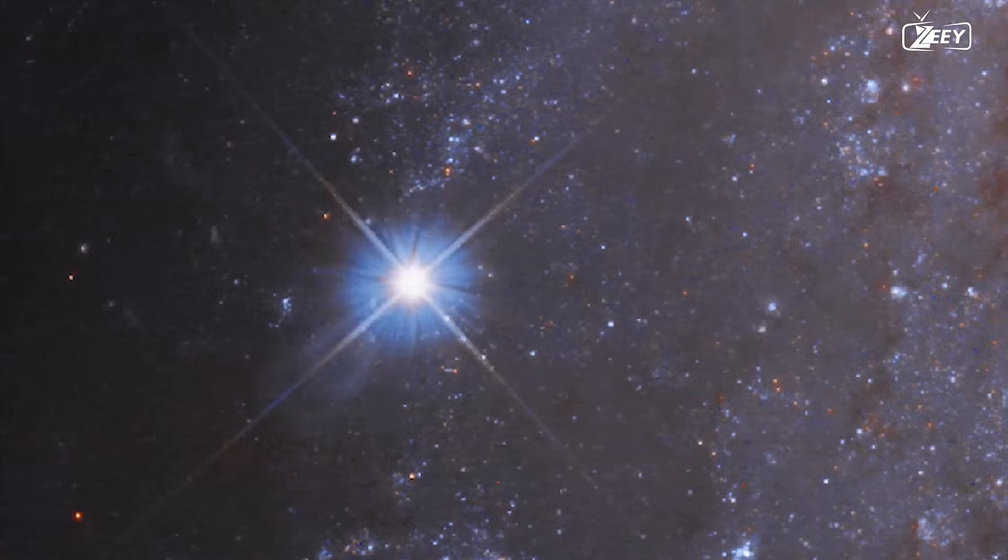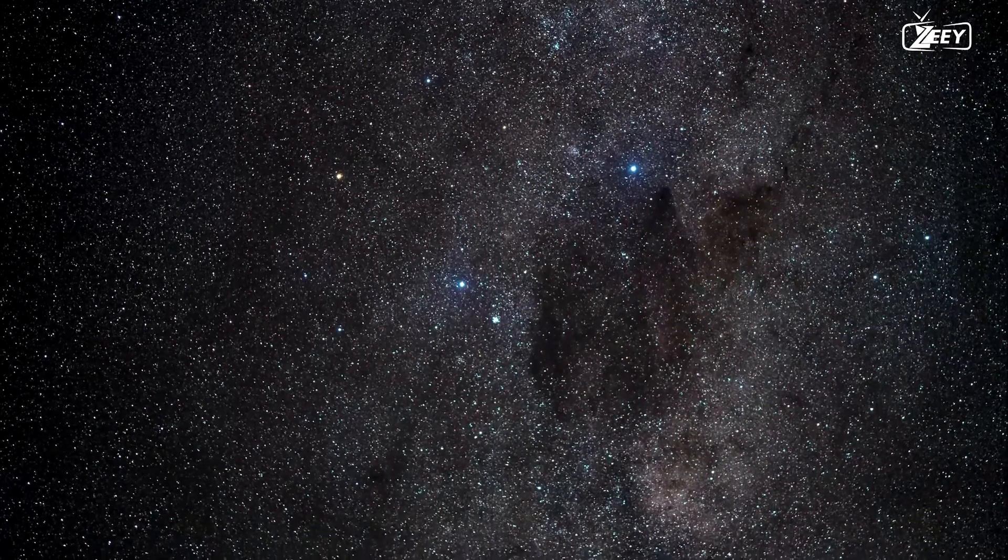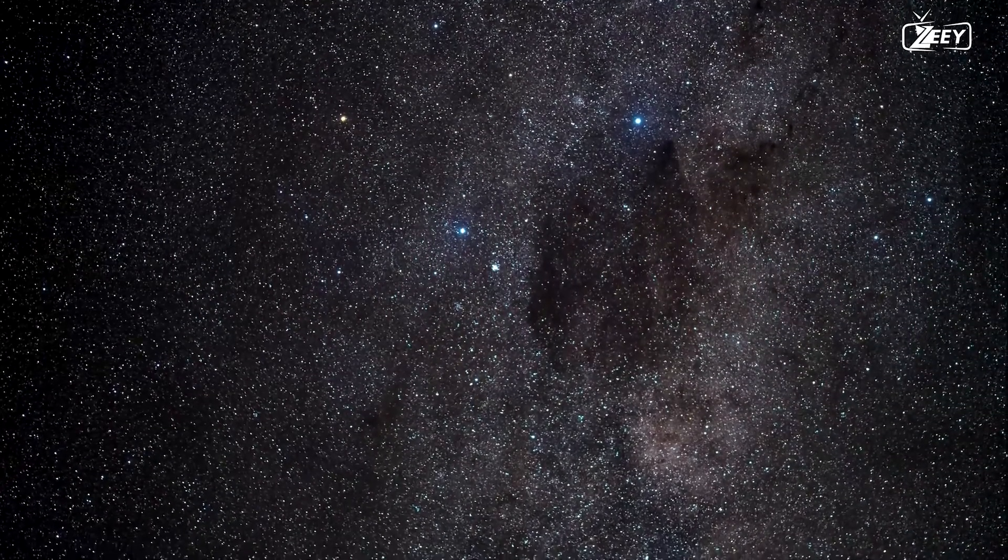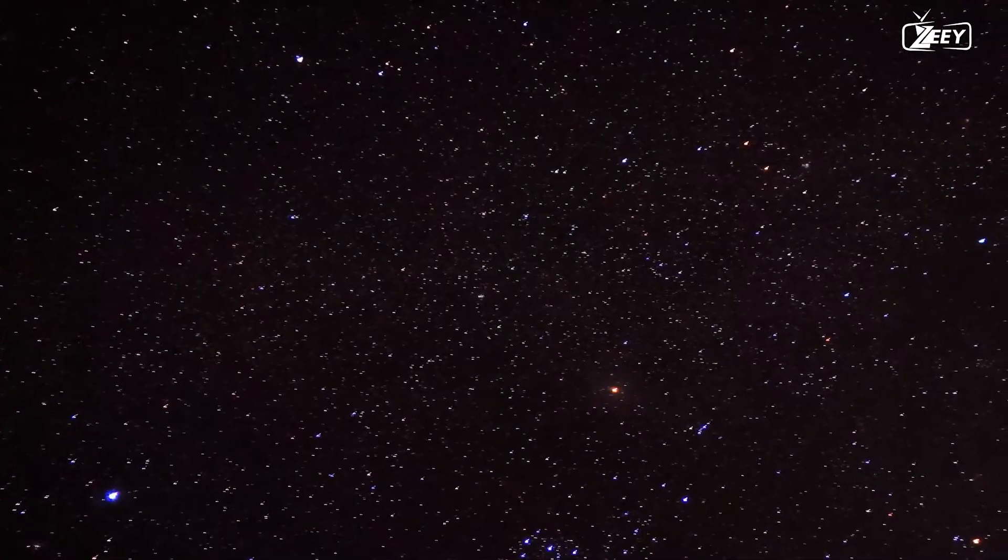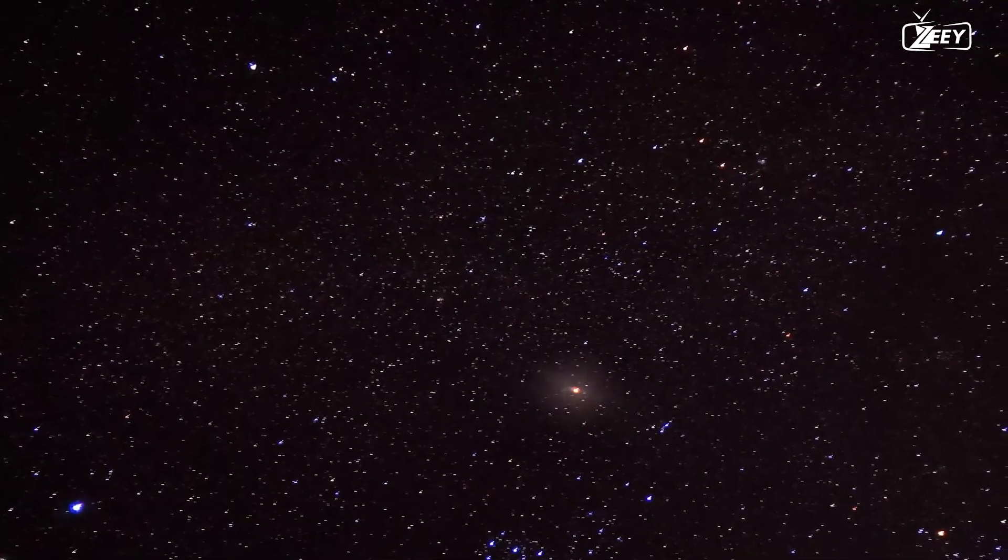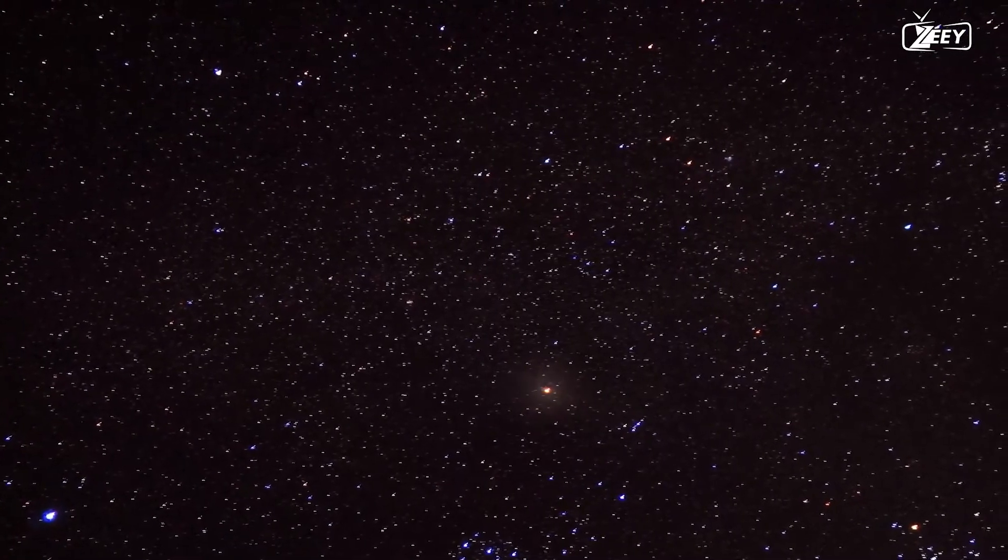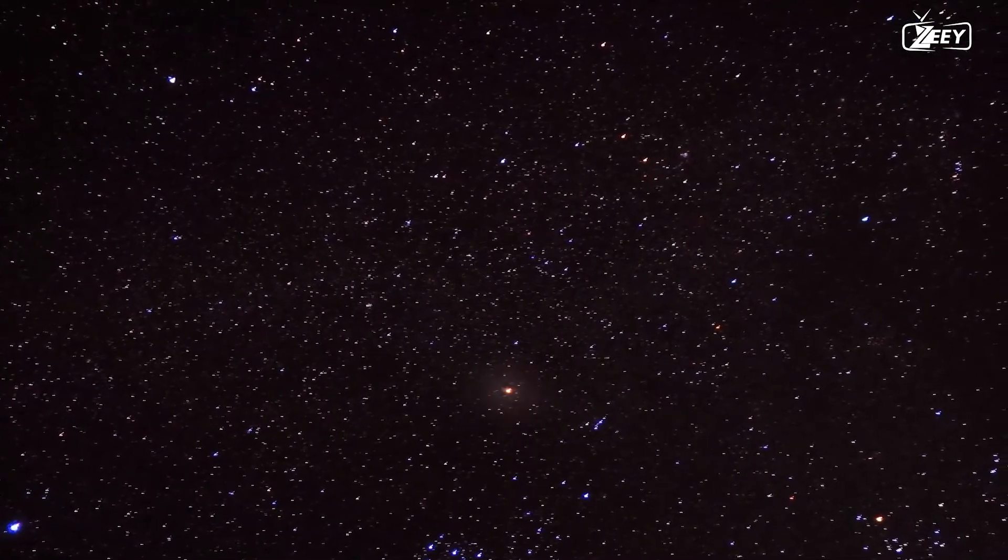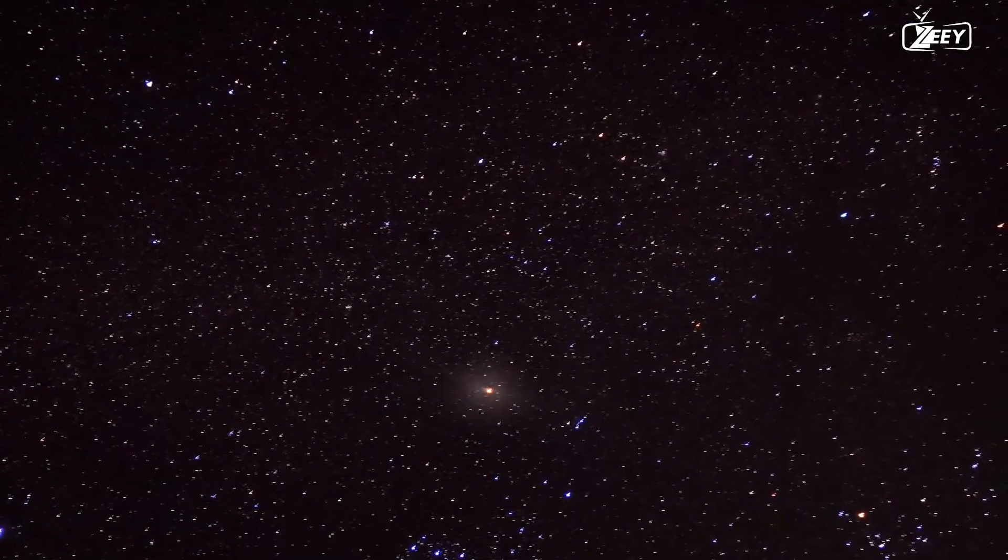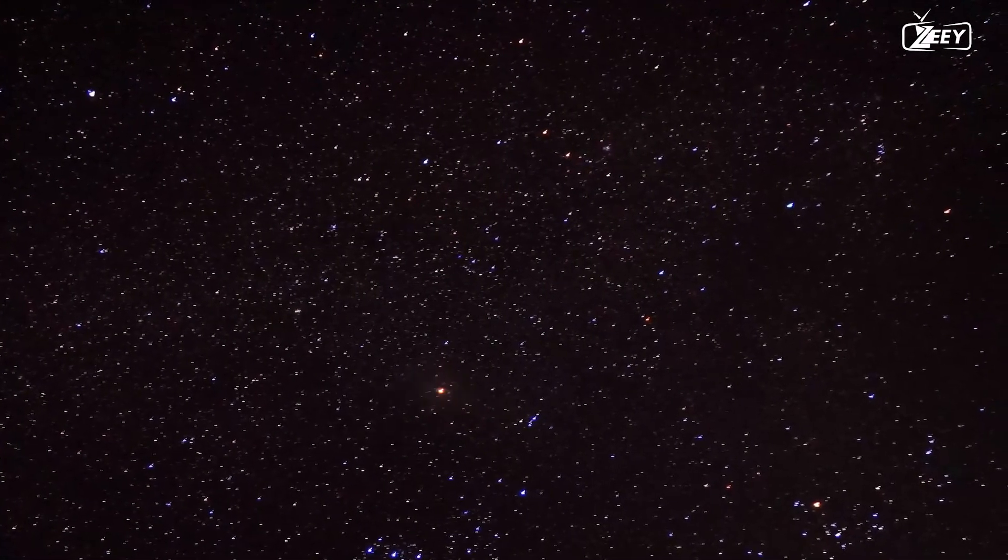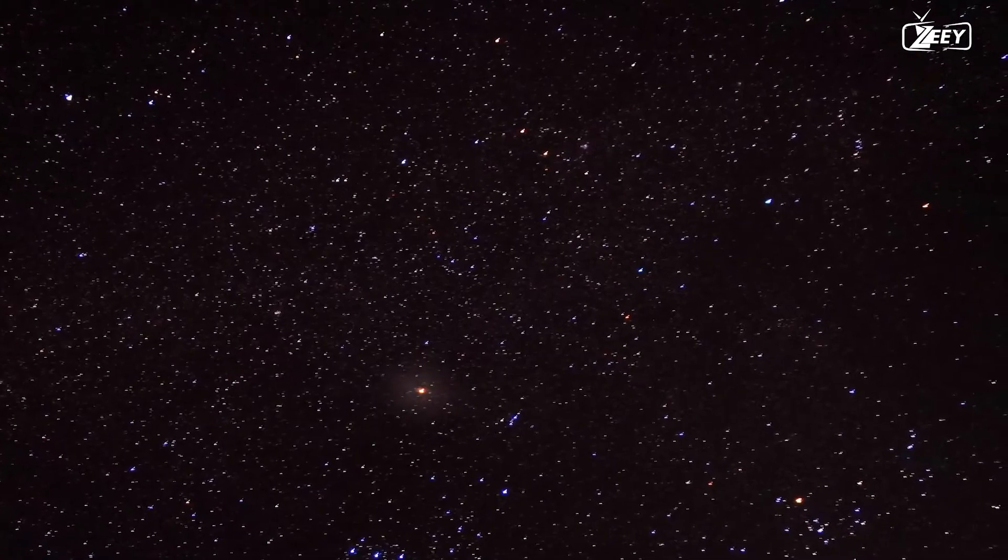You might want to witness this nova star for yourself. After sunset, the constellation Ophiuchus can be seen towards the south. It's located above the more well-known constellation Sagittarius, which contains the teapot asterism. If you look above the teapot spout and traverse the Milky Way's murky swath, you can see where RS Ophiuchi is located.